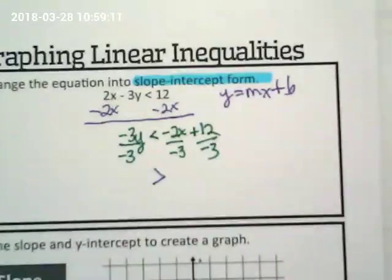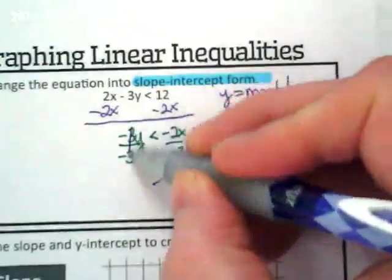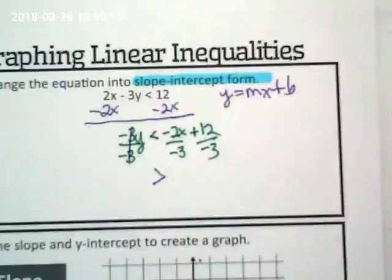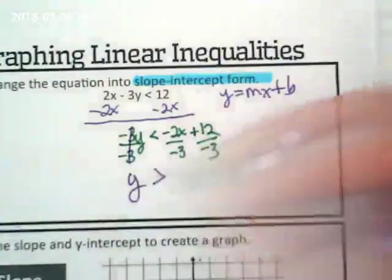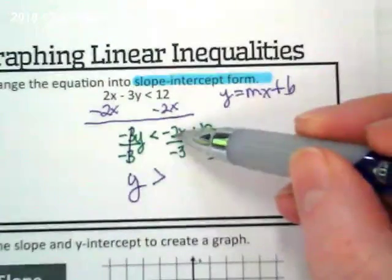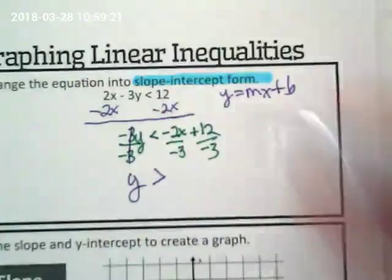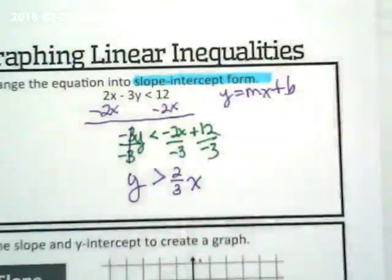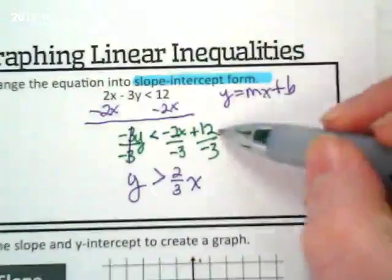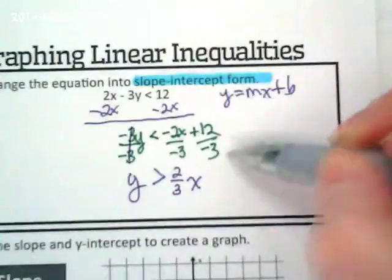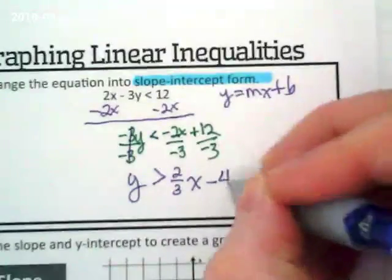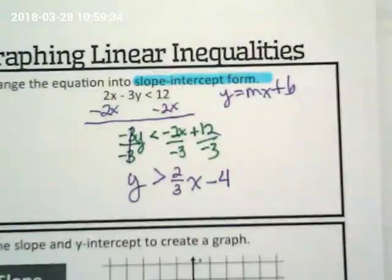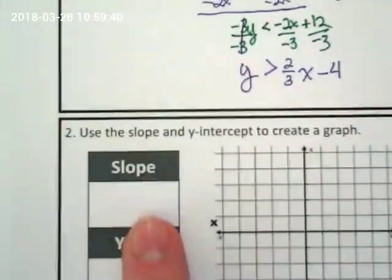So I'm going to divide all of these terms by negative 3. When I do that, it's going to flip the symbol from less than to greater than. Because I'm dividing by a negative. We're going to cross off the negative 3s because they cancel out, leaving us with Y. What happens with this negative 2 over negative 3? It's 2 over 3X. And what's positive 12 divided by negative 3? Negative 4. Okay. So that negative 4 is important because it's our starting point on the graph.